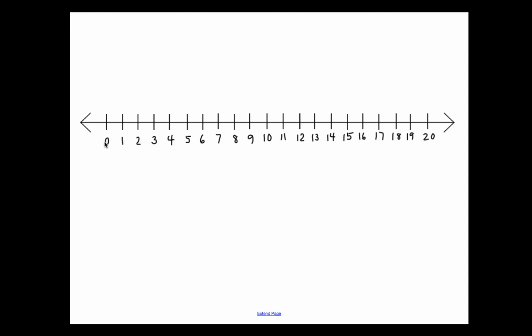So once I label 0, I can then label the next point 1 for the next counting number, and then 2 for the next and 3 for the next, 4, 5, and so on. And I can keep on going forever. That's why this arrow is here to let me know that I can go on forever.